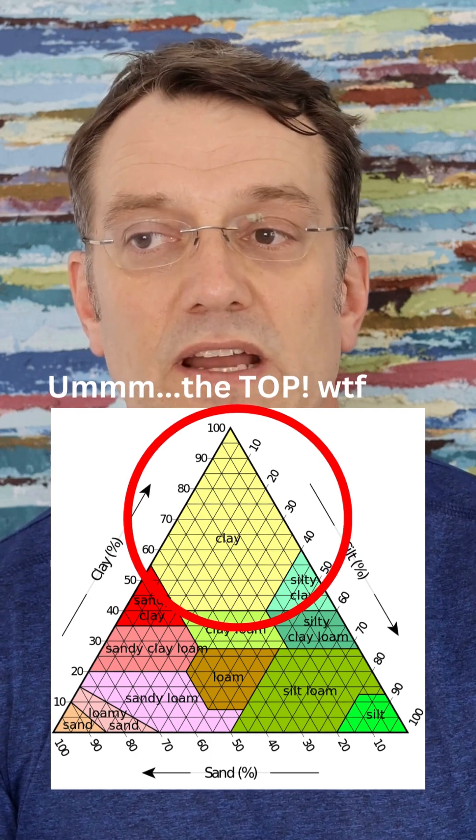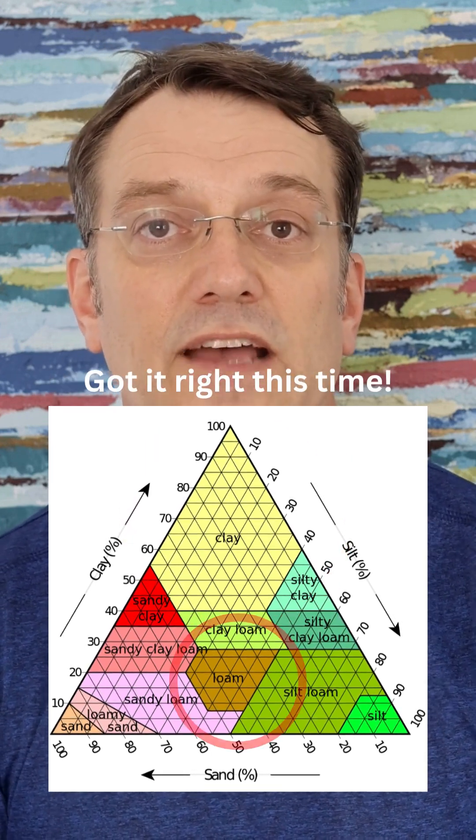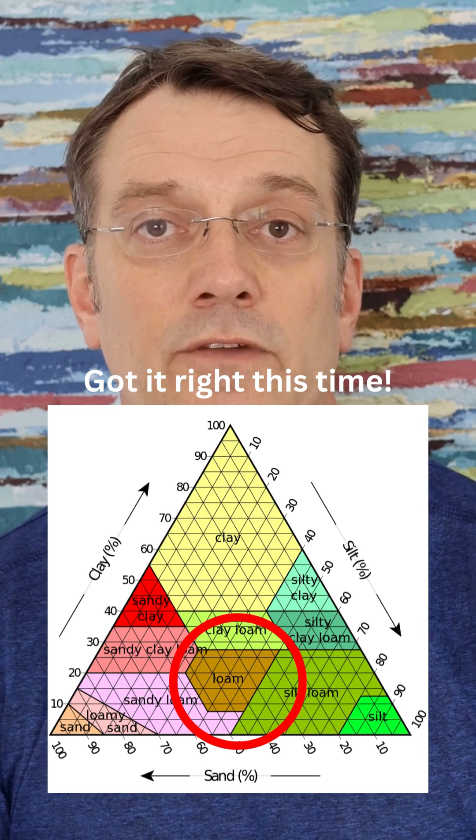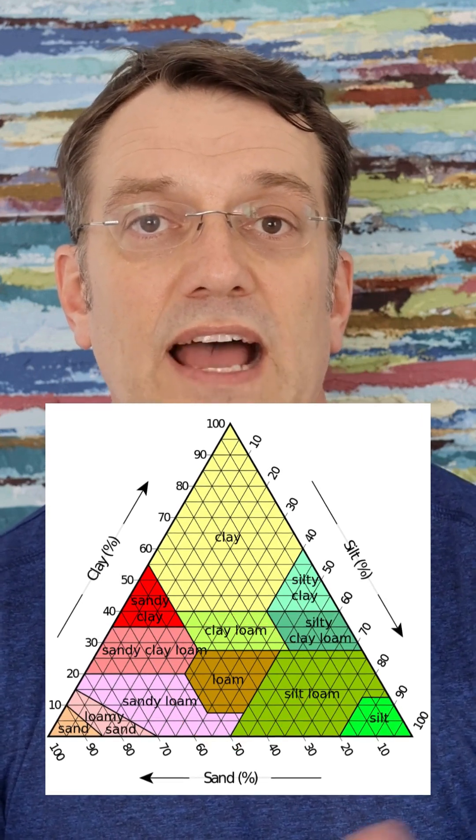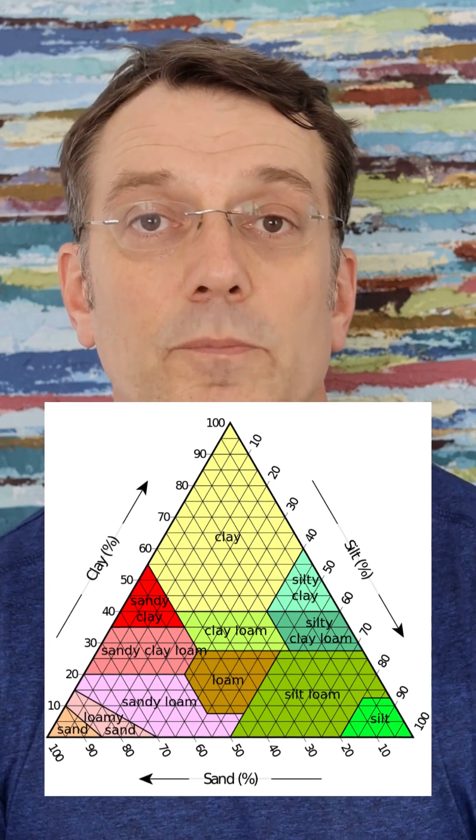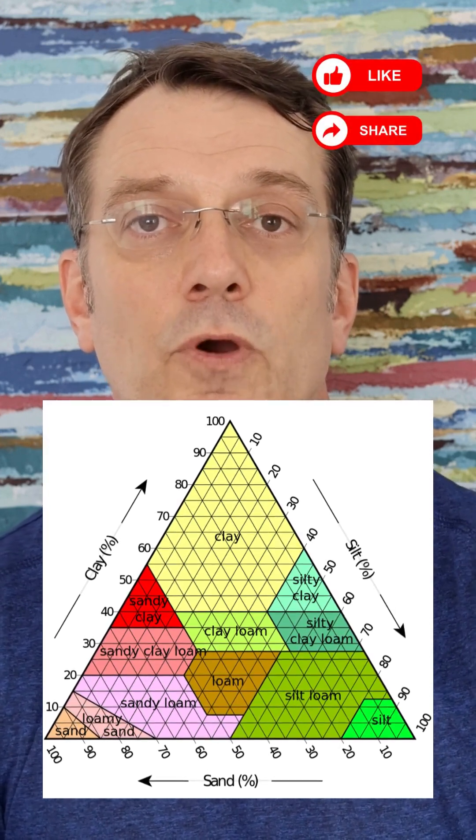A soil right in the middle of that, that loamy soil, that kind of dark brown color in the middle, has an ideal mixture of sand for drainage, clay for water retention, and silt to allow the particles not to clump together and promotes good mixing and allows for root growth.